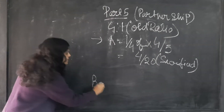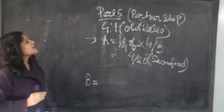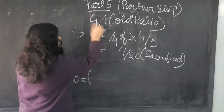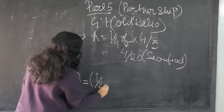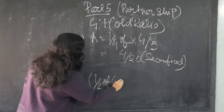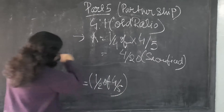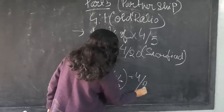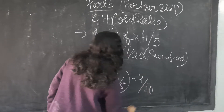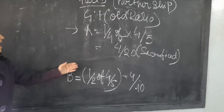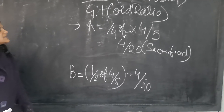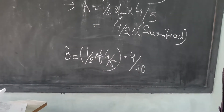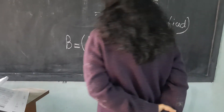Now coming to B. How much is B sacrificing? B sacrifices 1/2 of his share. What is B's share? It is 1/5. Then half of 1/5 — so how much? B's share is 4 by 10. How much has A sacrificed? 4 by 20. How much has B sacrificed? That is 4 by 10.